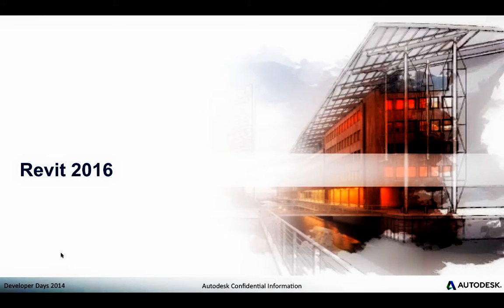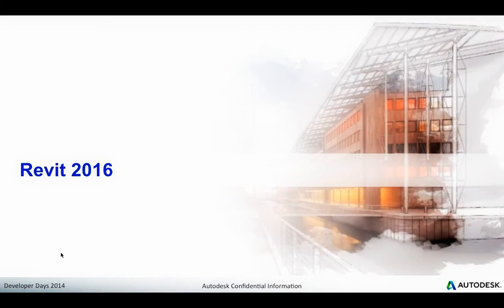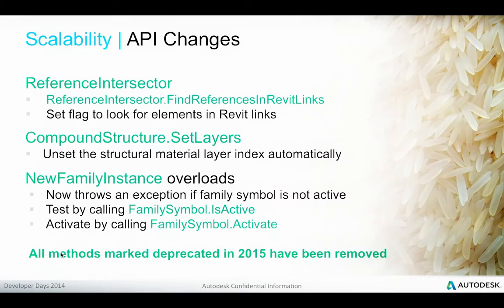In previous discussions of the Revit API news we separated the topics into rice and wine — rice affecting existing applications and wine covering all the new functionality. In this case we have one single slide about changes affecting existing applications. It deals with the topics of linked files and loading of families, obviously both very important areas for handling large projects.